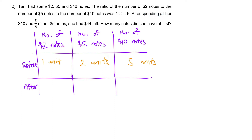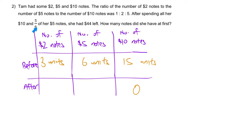After spending all her $10 notes, those become 0. She spent 5/6 of her $5 notes, so it will be easier if the number of units corresponds to the denominator. We change 2 units to 6 units by multiplying by 3, giving us the equivalent ratio 3:6:15. Having 6 units for $5 notes, spending 5 out of 6 means she's left with 1 unit. The $2 notes are untouched, so they remain at 3 units.